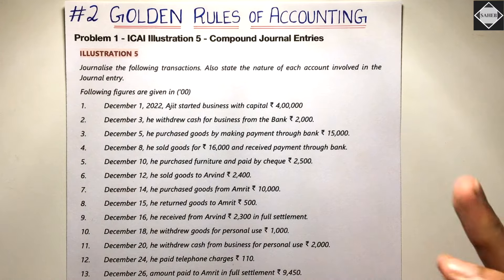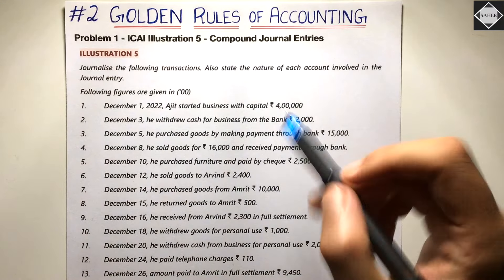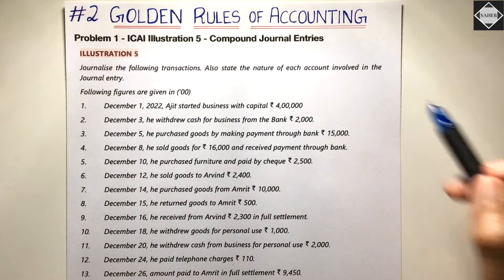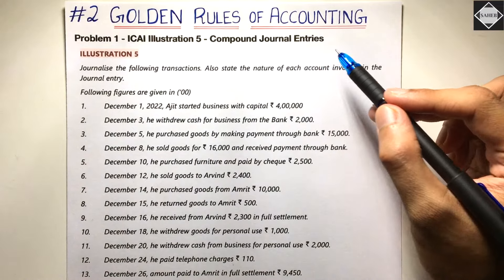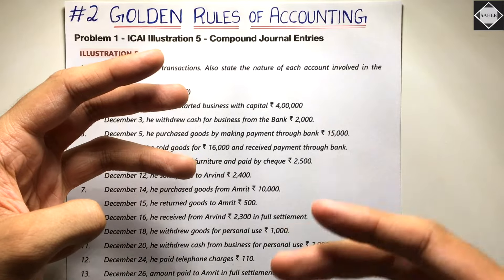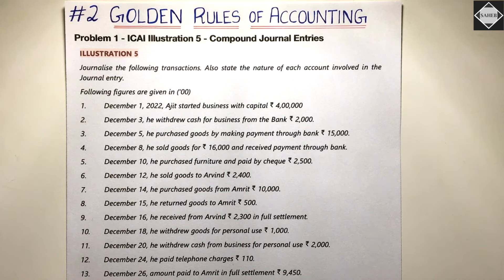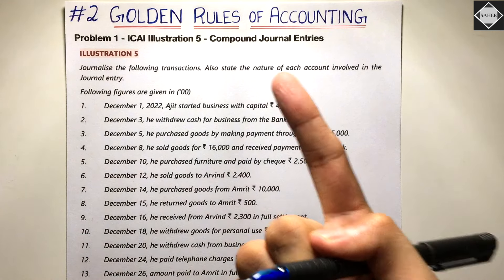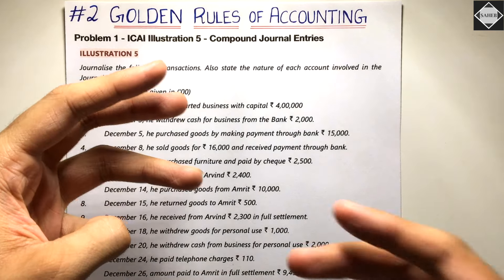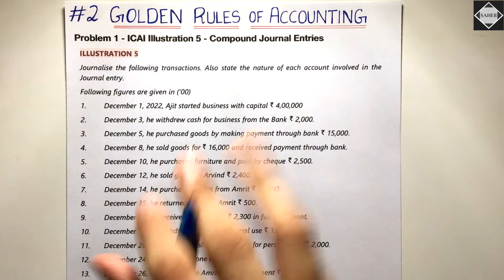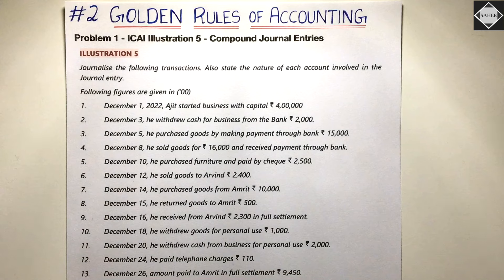The question is Illustration 5 from CA Foundation study material, chapter: Journal Entries. In this question we have compound journal entries. Compound journal entries are journal entries where multiple accounts are getting debited or multiple accounts are getting credited. This happens when you record multiple transactions with just one journal entry, or when a transaction impacts more than two accounts.